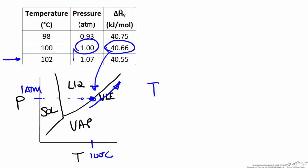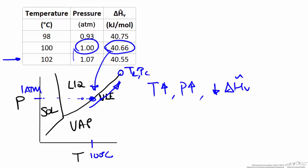As we increase temperature and pressure along the VLE curve, the heat of vaporization decreases — it takes less energy to vaporize the liquid to the vapor phase. If we continue up the vapor-liquid equilibrium line we eventually reach the critical point, TC and PC. At the critical point we can no longer maintain differentiable phases at equilibrium; instead we have a supercritical fluid that exhibits properties of one phase. As we approach the critical point, the heat of vaporization approaches zero.